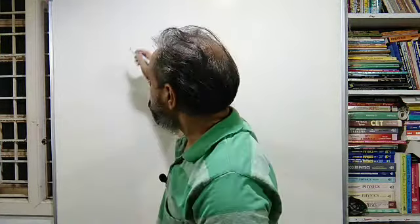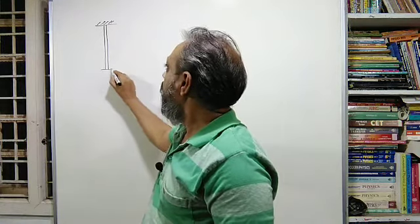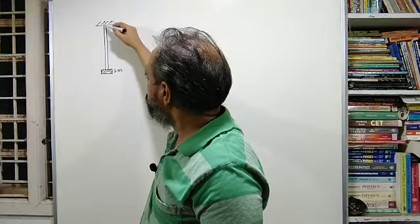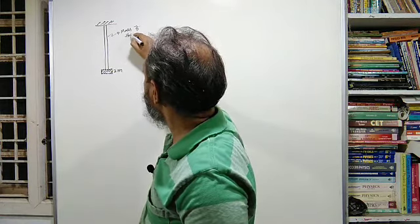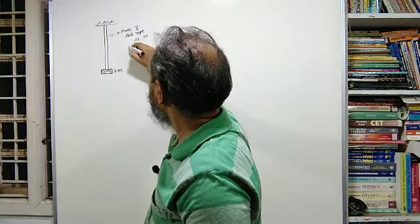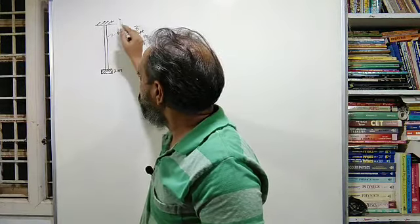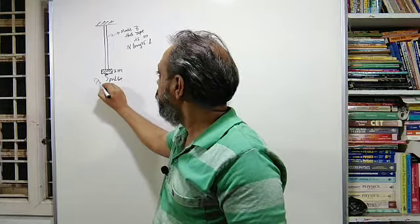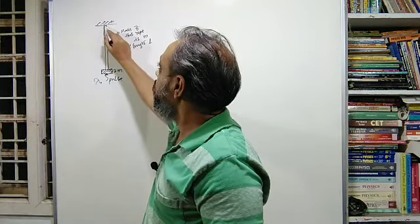This is the first question of the paragraph. The roof is here, this is the thick rope, and the hanging mass is here. This mass is 2M, the mass of the rope is M and length L. We have to find the wavelength of the pulse — it is produced at the lower end with wavelength λ₀, and we need to find its wavelength when it reaches the upper end.